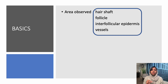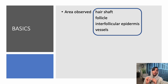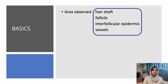What are the areas that you need to observe while doing a trichoscopic examination? One is the hair shaft and then hair follicle, interfollicular epidermis, as well as vessels. You need to know first of all what you will see in a normal scalp in order to identify pathological findings.